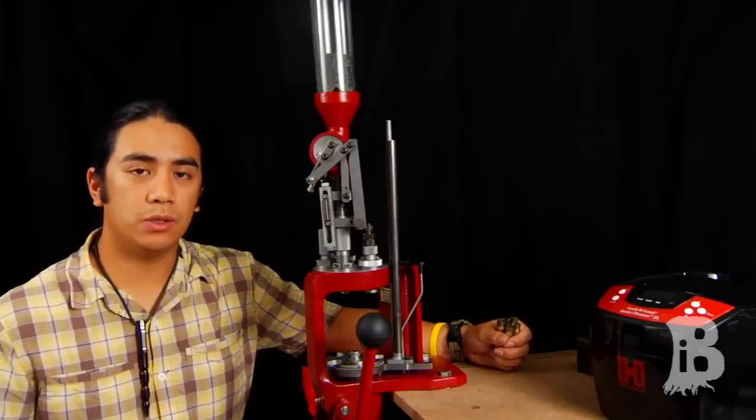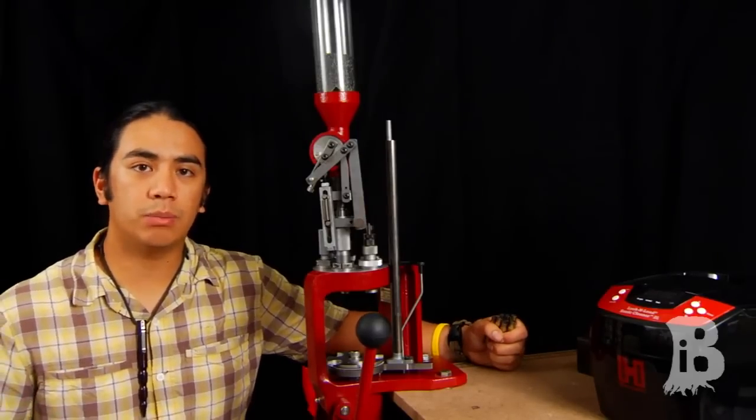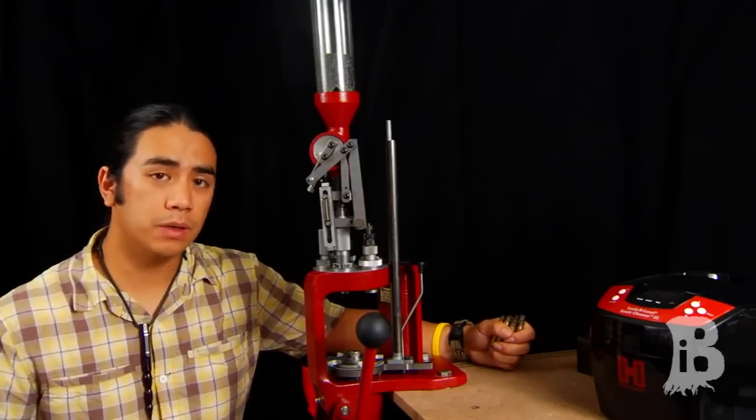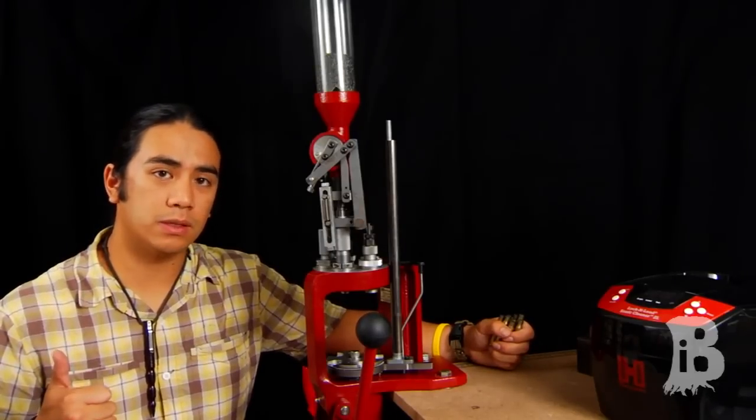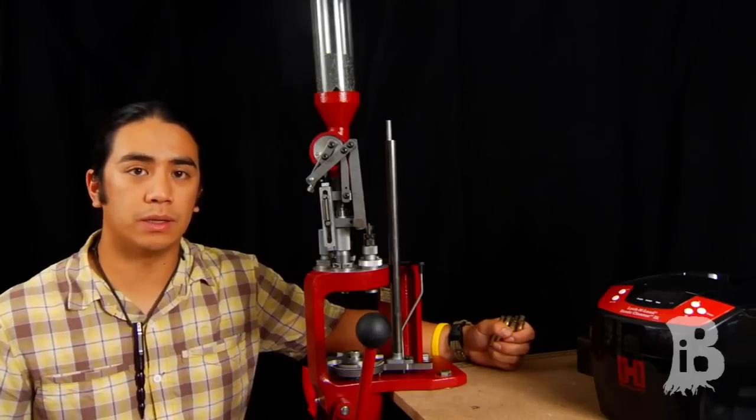One of the first things you're going to be doing when you reload for a rifle or pistol is to clean the brass. Unless you get the brass brand new from the factory, it's really important that you clean it for two reasons. One, it makes it more consistent in ignition, and two, it prevents your dies from being scratched up and damaged.